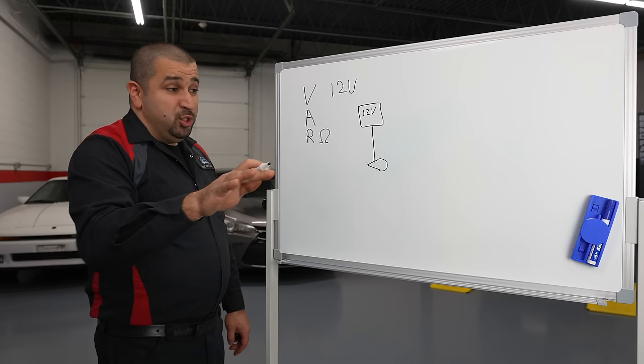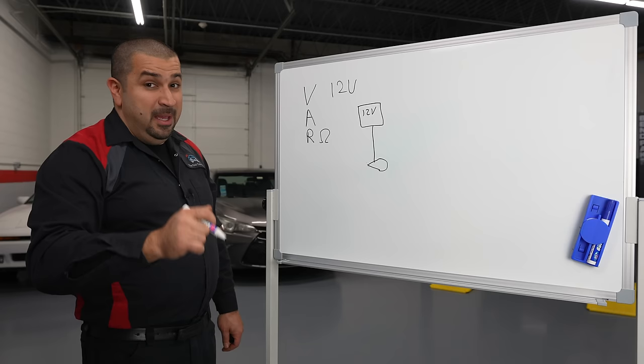If there is no path to ground, amperage is sitting on his lawn chair, drinking his water, not caring about the world. But voltage will go exploring for ground. And we're going to explain what that means in a bit.